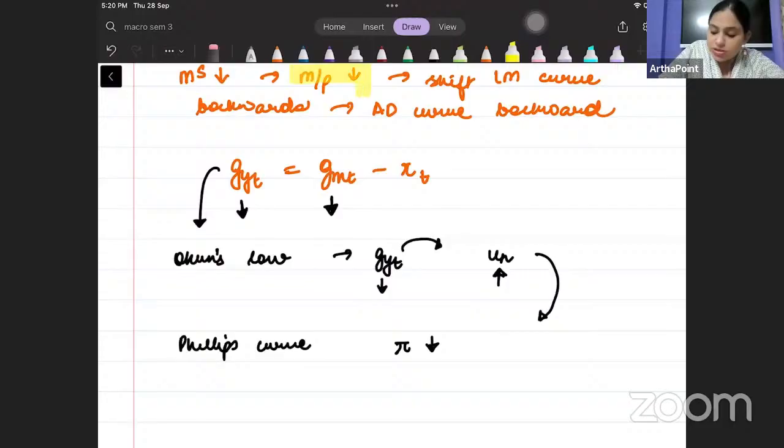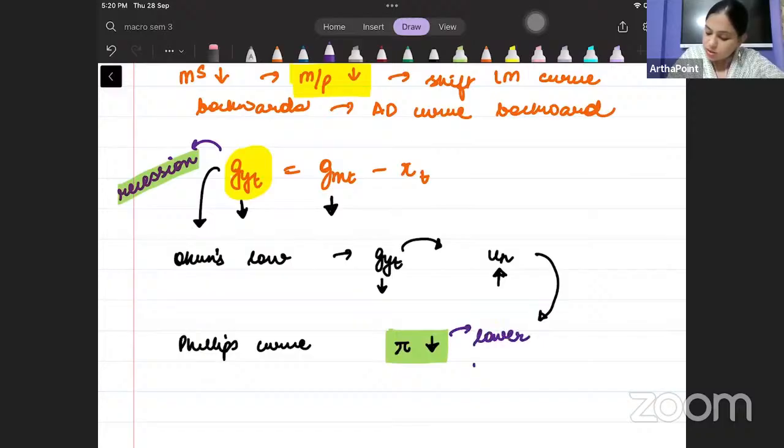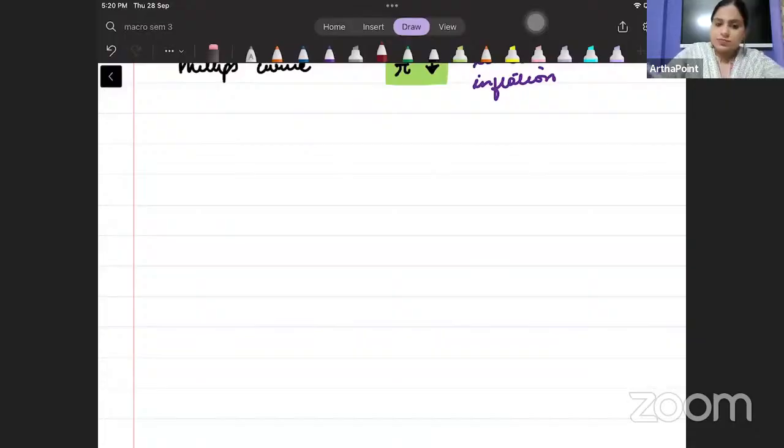When we follow a tightened monetary policy, when we reduce the money supply, it means that output growth will fall. And fall in output growth is called recession. So it will cause fall in the output growth and it will also cause deflation or lower inflation. The book has explained this excellently through a table. Very important. I will be teaching you that table now. But before that, let's just write everything down.